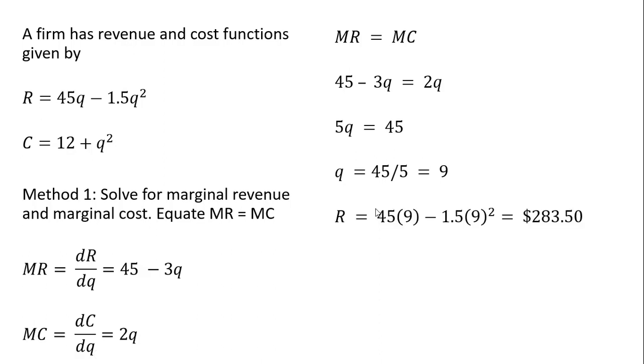To calculate the total profit, we're going to get revenue. So we take our revenue function, and we plug in 9 for q, and we simplify. And then we get our cost, which is the cost of producing 9 units of output. Plug this 9 into the cost function, and we get $93. And profit, we'll just use the symbol pi here for profit, which is revenue minus cost, will equal $190.50. So that's method 1.